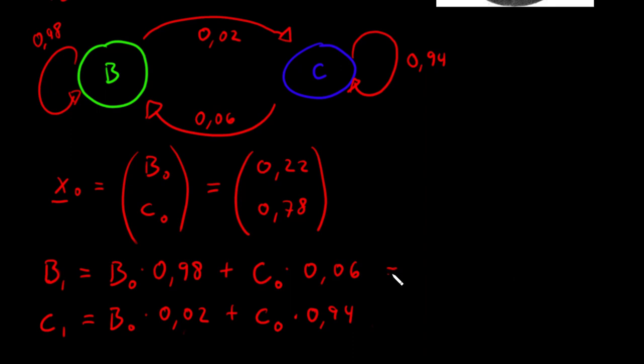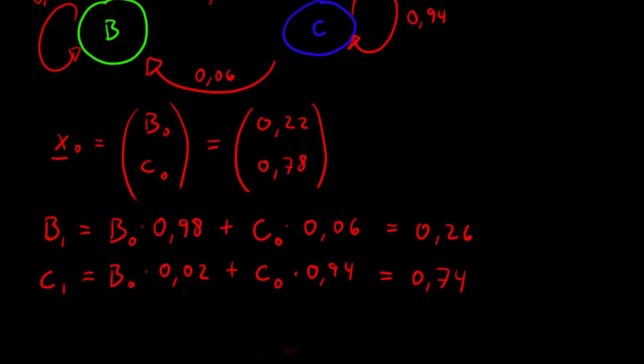This can be calculated, of course, as a number. And doing that, you end up with 0.26 and 0.74. So actually, Brno's population increased by 4% and the capital decreased by 4% as well.